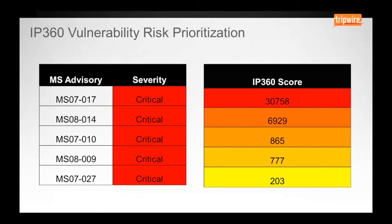In this case, the score of 30,758 represents a vulnerability that can be attacked remotely and allows an attacker to completely take over the host. On the other hand, the vulnerability at the bottom of the list, which Microsoft classifies as critical, doesn't possess any characteristics that would enable system compromise.